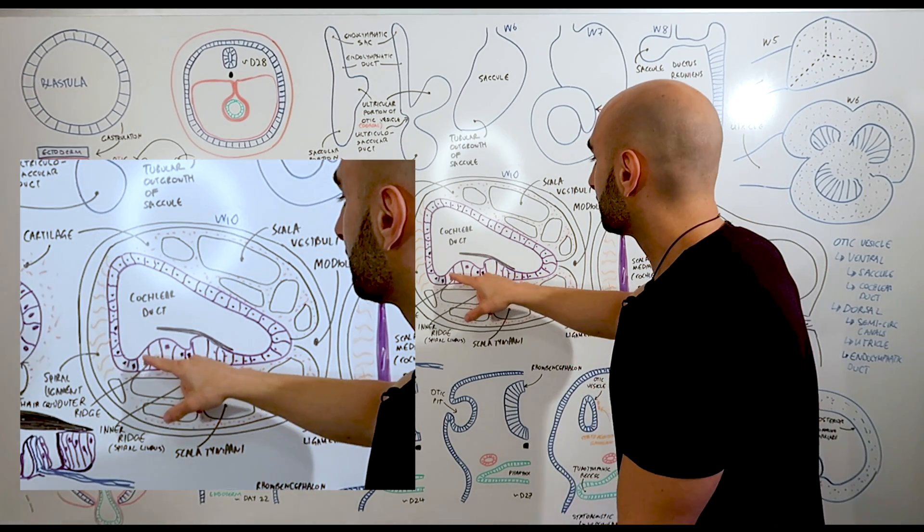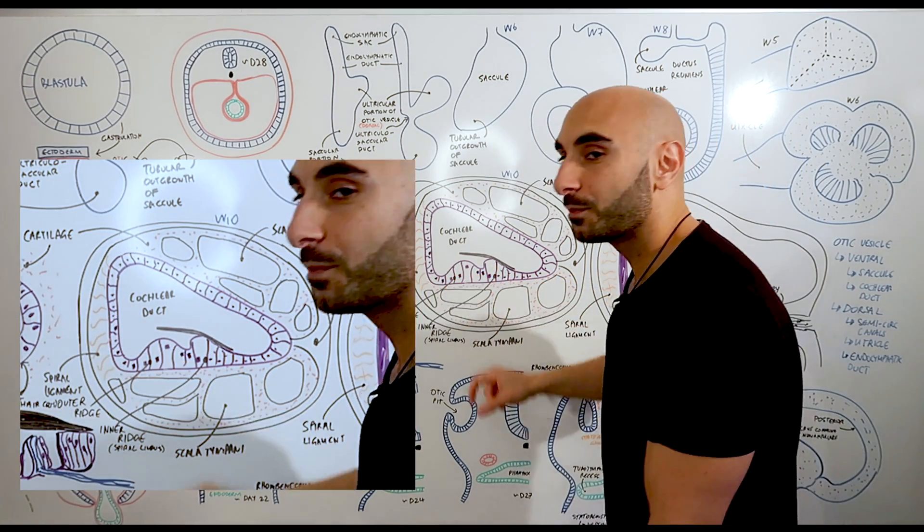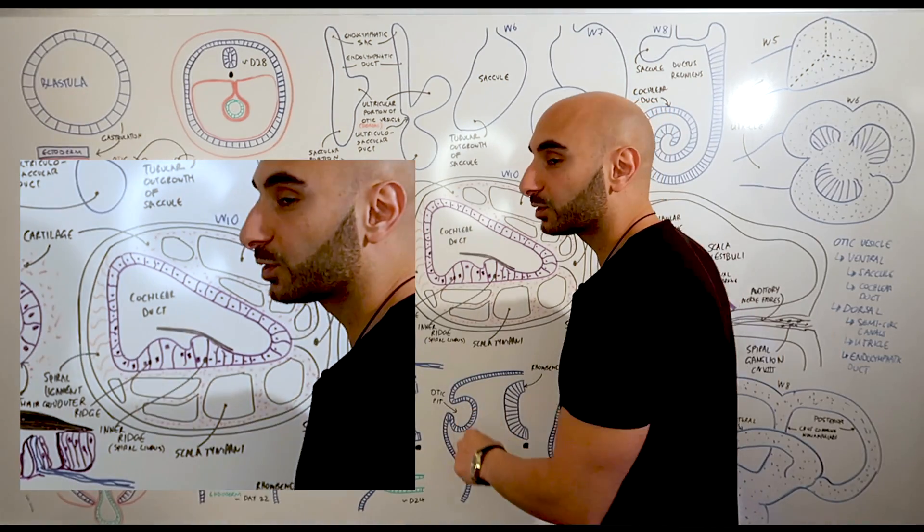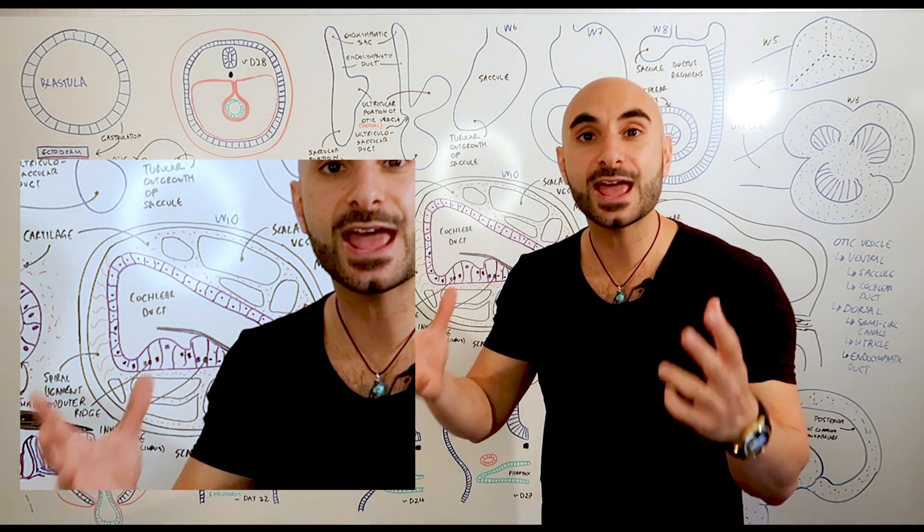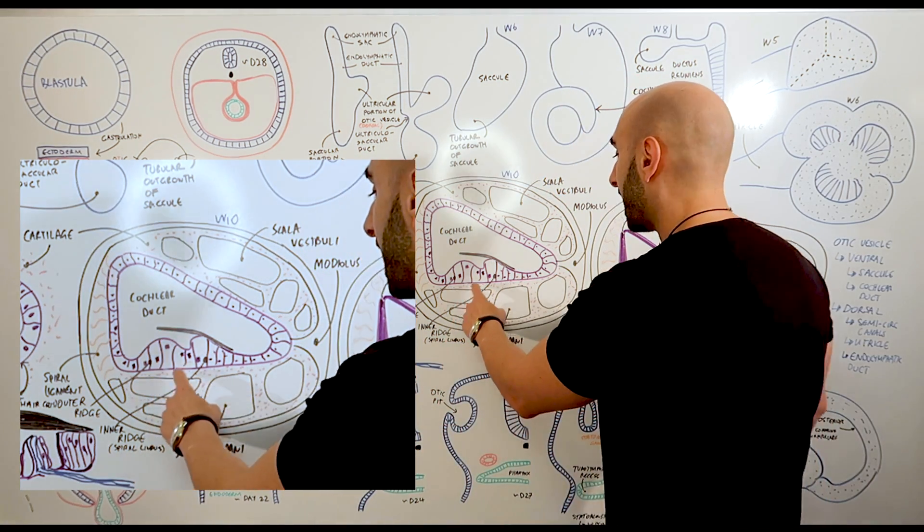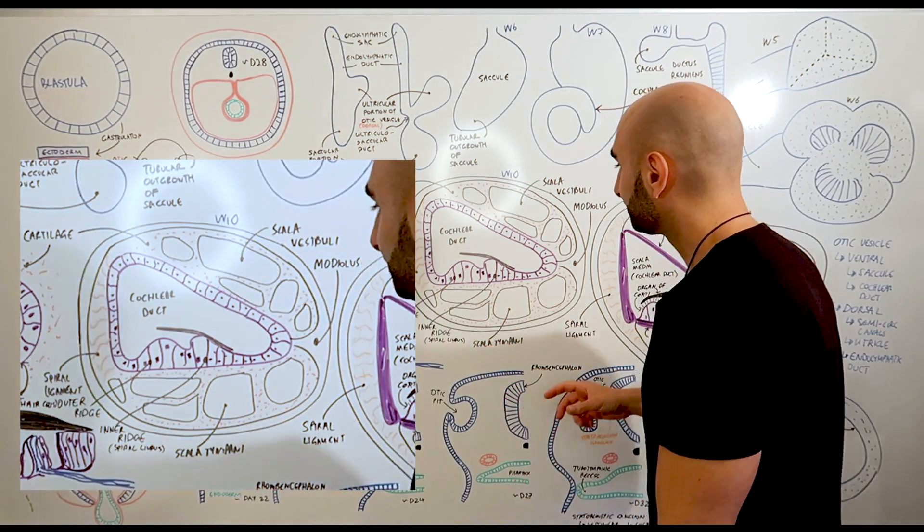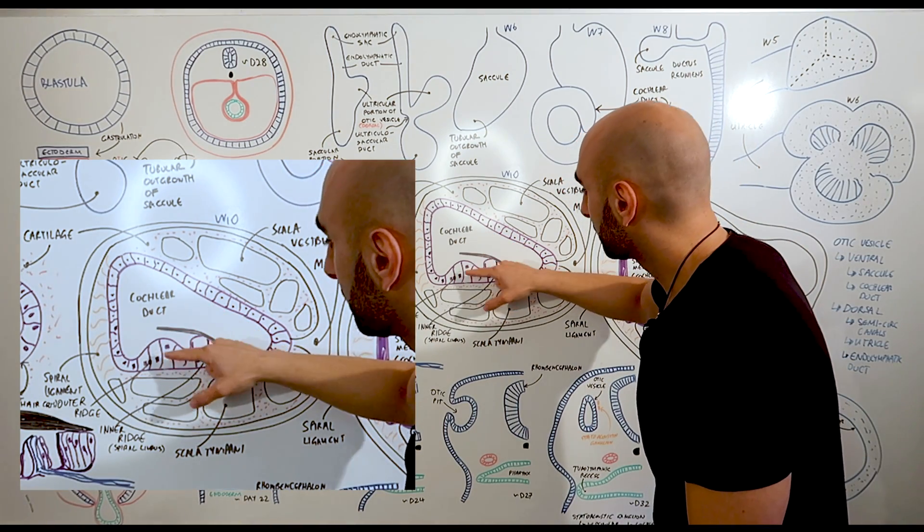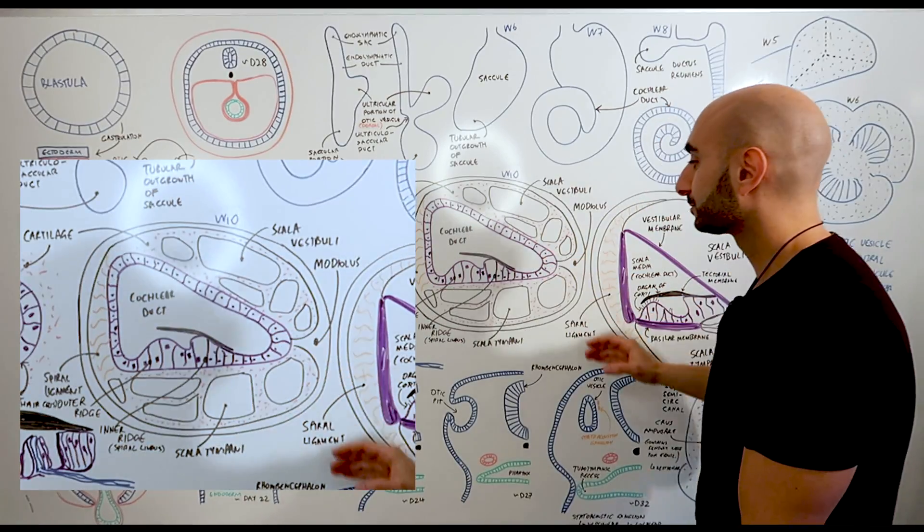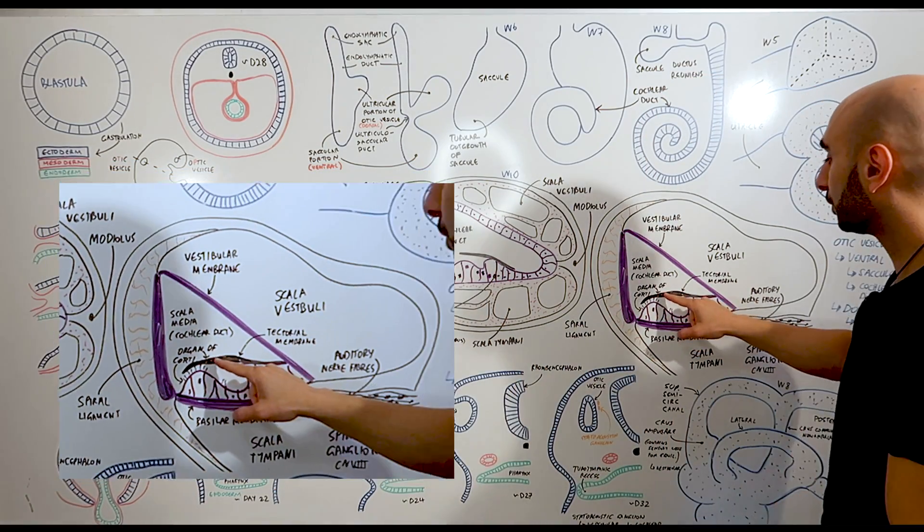We have some of the epithelial cells of the cochlear duct forming two main components. The first one is the outer ridge, and the outer ridge is responsible or gives rise to the hair cells - the hair cells are the sensory cells. And we have the inner ridge which will eventually become the spiral limbus. On top of this outer ridge and inner ridge is the tectorial membrane. And together this will eventually form the organ of Corti.